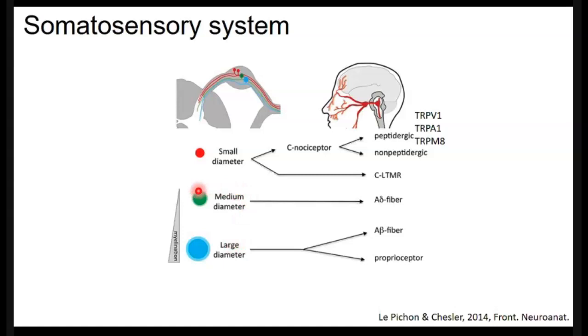This is a simplification of the classification within this system, and it's based primarily on studies of skin innervation. But regarding the teeth, it's generally thought that innervation consists of small and medium diameter neurons.